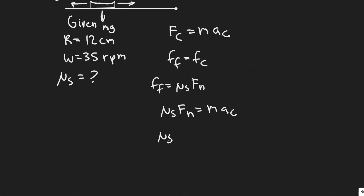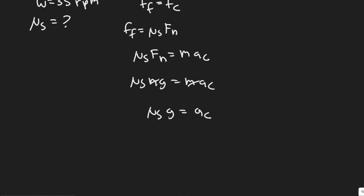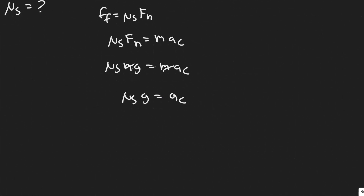Notice that the mass M cancels from both sides, giving us μs times g equals A_c. So we need to find what A_c is. We already know g is a constant value — the acceleration due to gravity, 9.8 m/s².